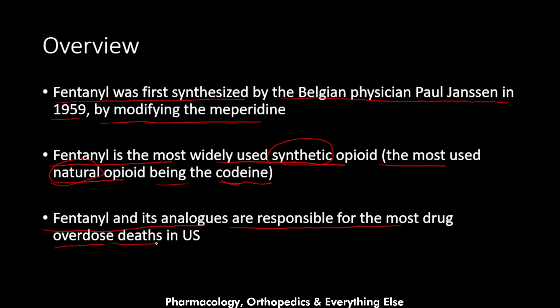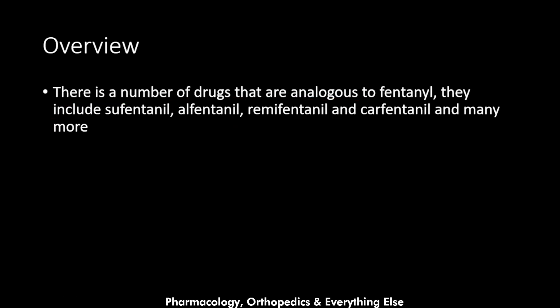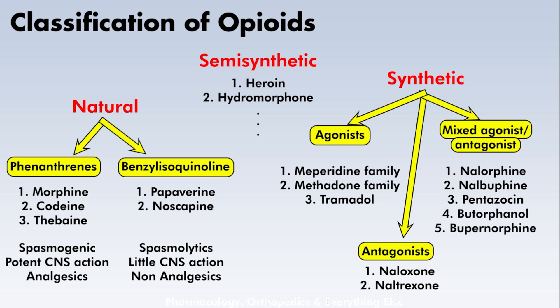Fentanyl and its analogous agents are responsible for the most drug overdose deaths in the United States, because it is easy to overdose on this medication. Examples of drugs analogous to fentanyl include sufentanil, alfentanil, remifentanil, carfentanil, and many more — some of which are even more potent than fentanyl itself.